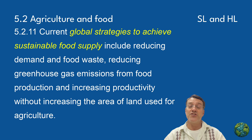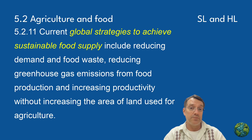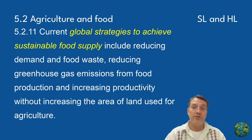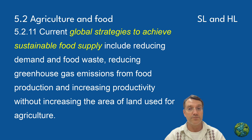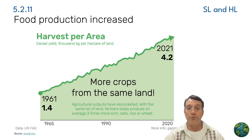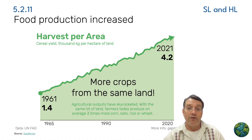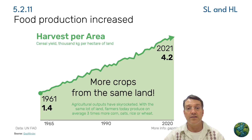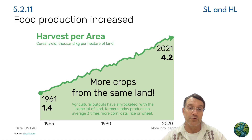Current global strategies to achieve sustainable food supplies focus on several key areas: reducing demand and food waste, reducing greenhouse gas emissions from food production, and increasing productivity without increasing the area of land used for agriculture. These represent a shift away from simply producing more food to producing it more efficiently and sustainably. This graph shows remarkable progress in agricultural productivity — from 1961 to 2021, global cereal yields increased from 1.4 to 4.2 thousand kilograms per hectare, meaning farmers today produce on average three times as much corn, oats, rice, or wheat on the same amount of land.